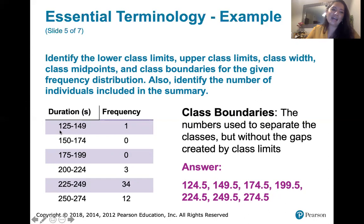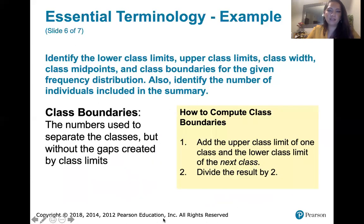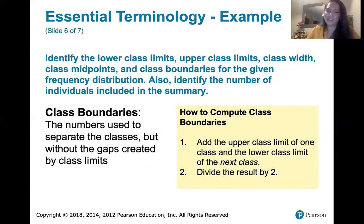We also need to add one at the beginning — assuming the pattern holds, we subtract 0.5 from 125 to get the first class boundary. The formula is: add the upper class limit of one class and the lower class limit of the next class, then divide by two. Or just find the difference between those two and split it.